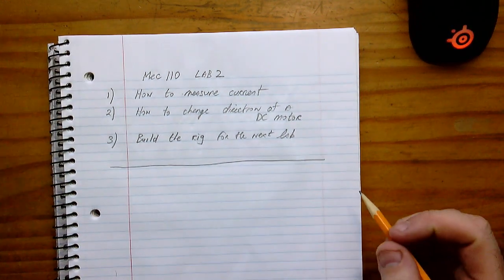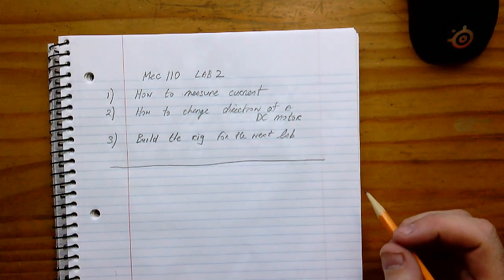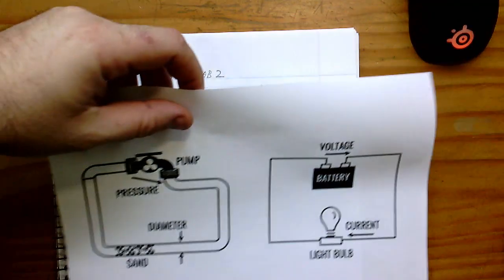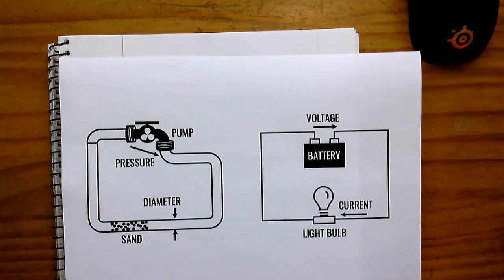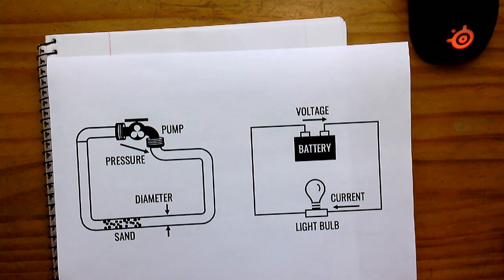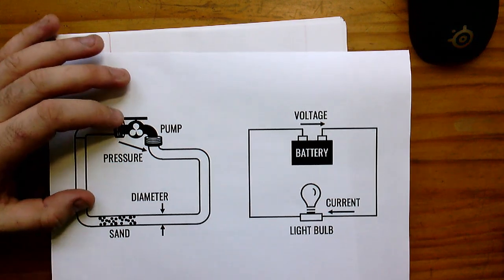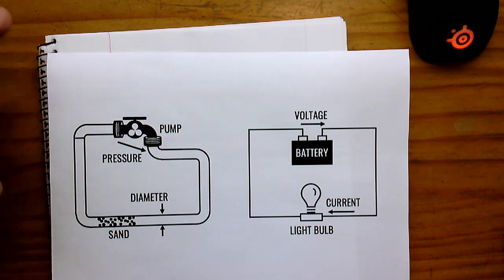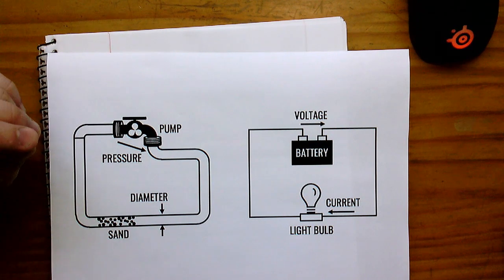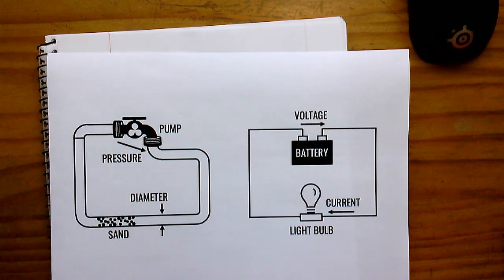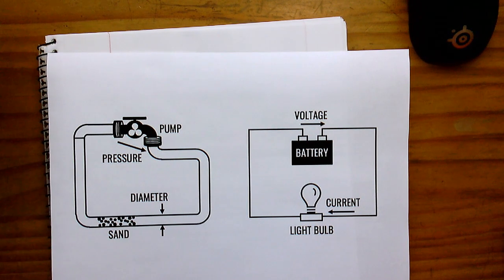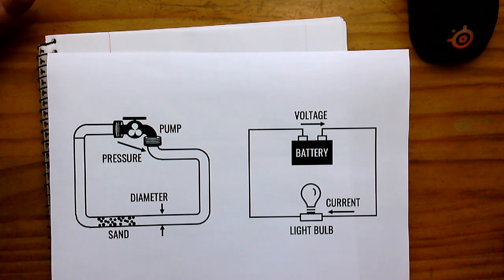I've pulled this picture off the internet. Hopefully at this stage you understand the relationship between voltage applied and the speed of the motor. If we want the motor to turn faster, we pump up the voltage and it will have a higher RPM.